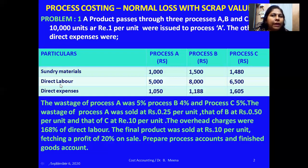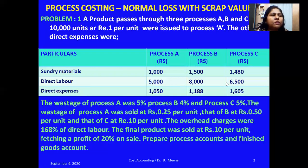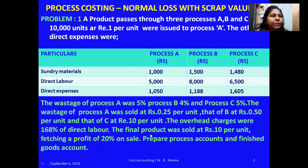The overhead charges are 168% of direct labor. For each process, we take the direct labor amount and multiply by 168%. For example, Process A direct labor is ₹5,000, so 5,000 × 168%; Process B is ₹8,000 × 168%; Process C is ₹6,500 × 168%. The final product was sold at ₹10 per unit, which is given to calculate the final profit. Prepare the process accounts and the finished goods account.